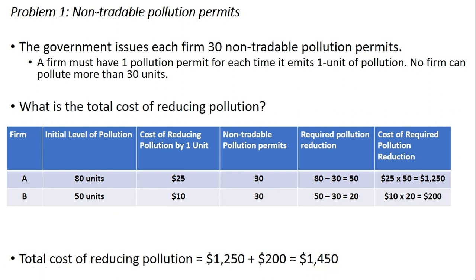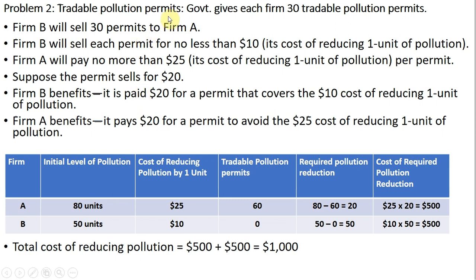Now for Example 2, we're going to have tradable pollution permits. The government will give each firm 30 tradable pollution permits, but firms are free to buy and sell permits if they desire. Firm B will end up selling all 30 of its permits to Firm A, leaving Firm A with 60 permits. Firm B will sell each permit for no less than $10, its cost of reducing one unit of pollution.